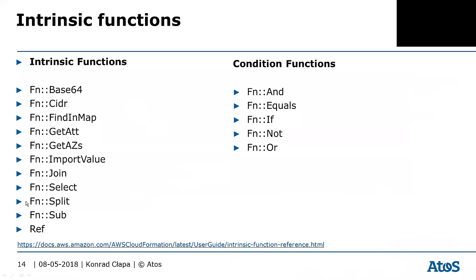There are three functions working on strings. You can use Join to create a URL of a website. Select picks a particular character or number of characters from a string. Split simply splits the string, and Sub gets part of the string.